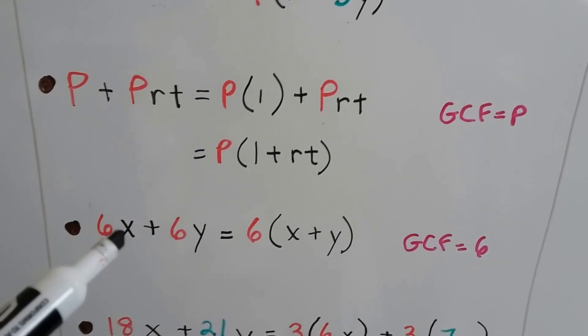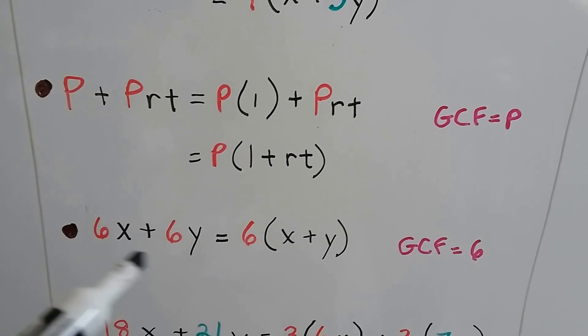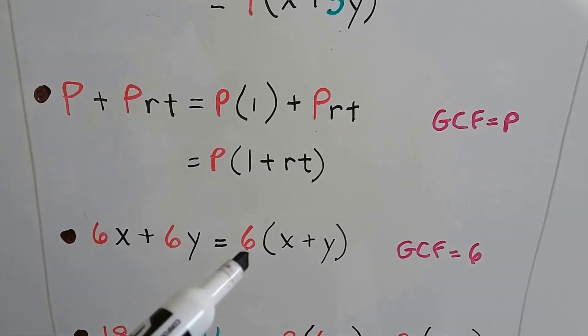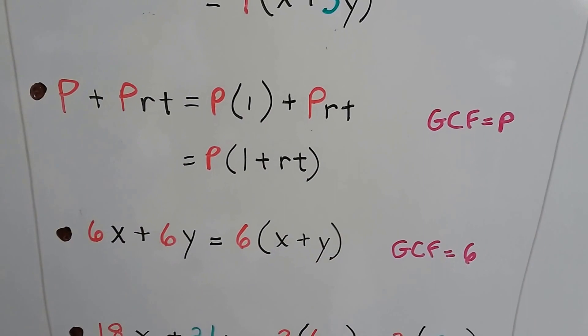If we have 6x plus 6y, they both have the 6 in common. So we can factor the 6 out as the greatest common factor, and just do 6 times x plus y.